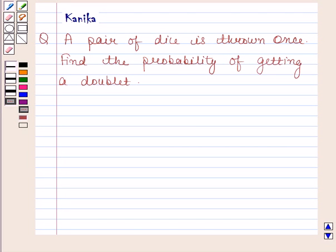Hi and welcome to our session. Let us discuss the following question. The question says a pair of dice is thrown once. Find the probability of getting a doublet.